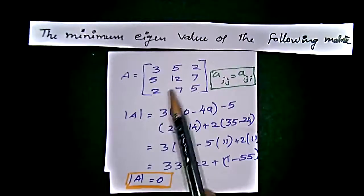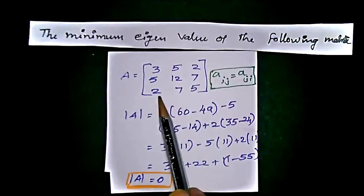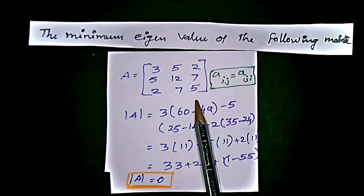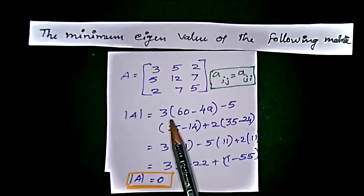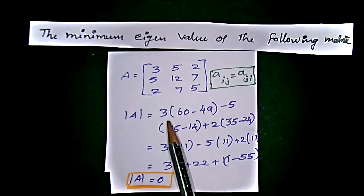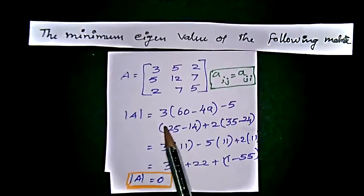We have 3, 5, 2; 5, 12, 7; and 2, 7, 5 in the three rows. We should go for the determinant value of this A matrix.